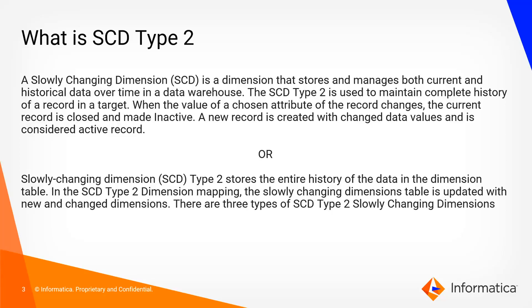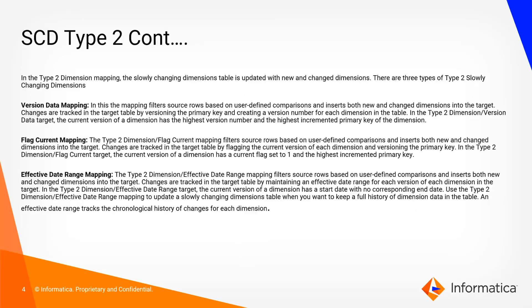In SCD Type 2 dimension mapping, the slowly changing dimension table is updated with the new record and changed dimension as well. There are three types or methods of SCD Type 2: version data mapping, flag current mapping, and effective date range mapping. In version data mapping, source rows are filtered based on user-defined comparison and inserts both new and current dimensions into the target.